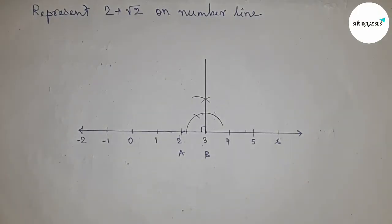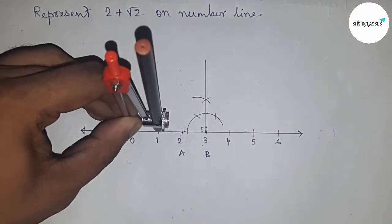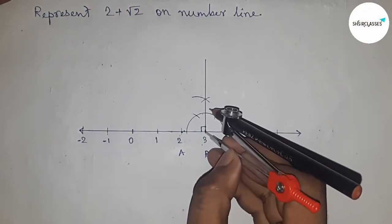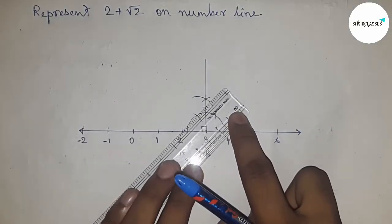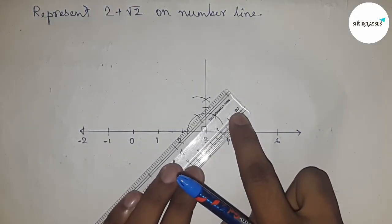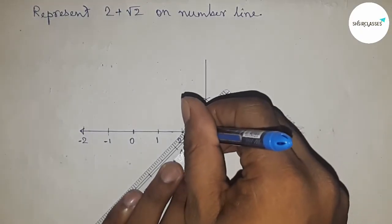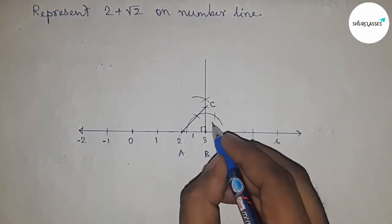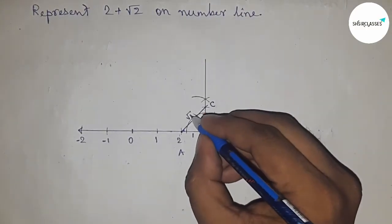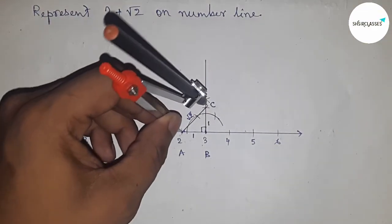Taking the length between any two numbers on the number line using the compass and placing it at point three, we cut the vertical line to get one unit. Joining this point to three, we get the hypotenuse. Since both legs are one unit each, this hypotenuse is root two units.